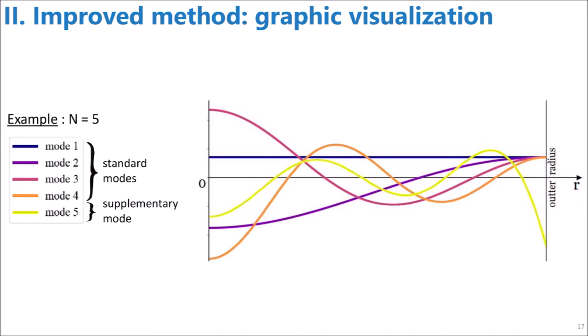Here, you can see for a total number of five modes, the axisymmetric supplementary mode among the others. At the right of the graph, you can see that all the modes satisfy the same boundary condition except the supplementary mode.